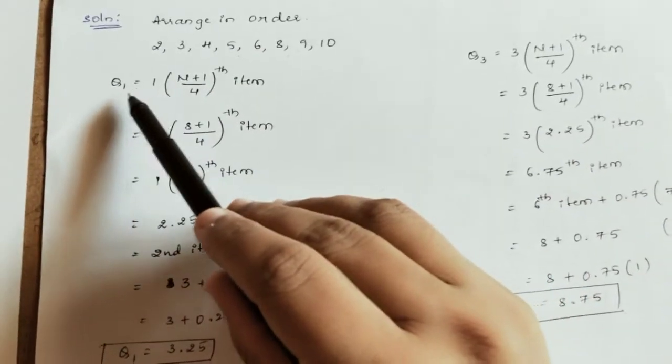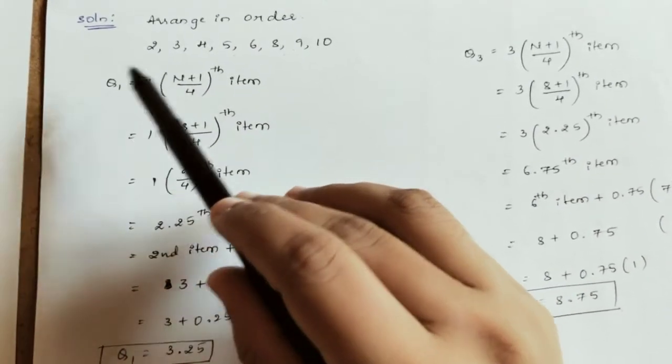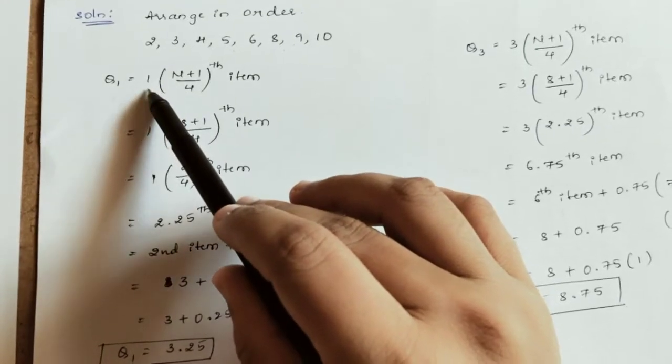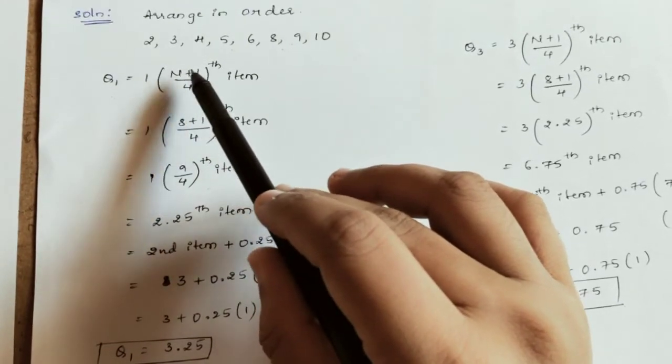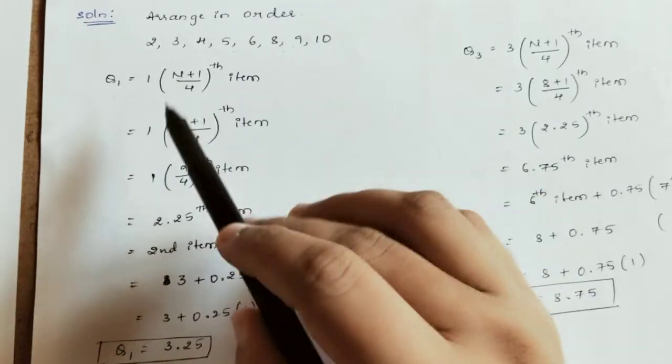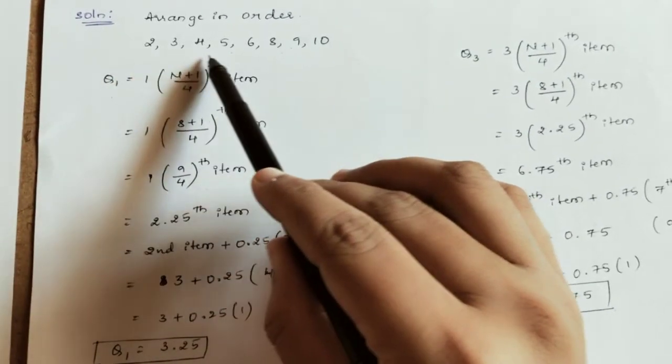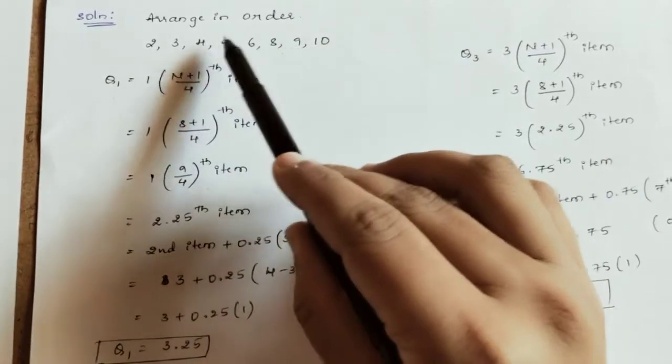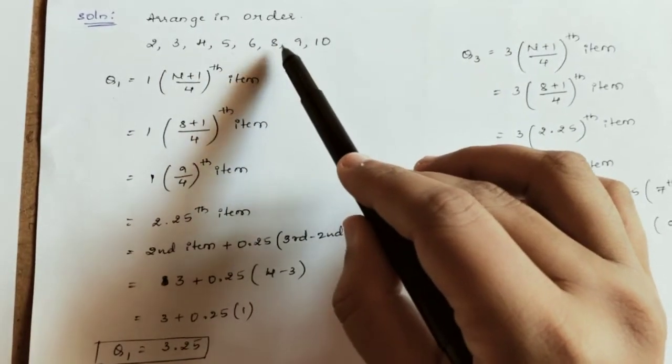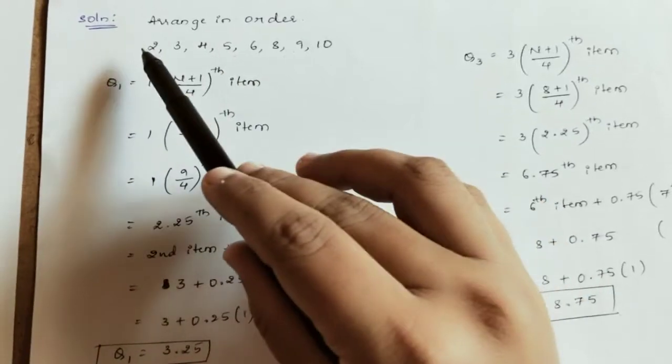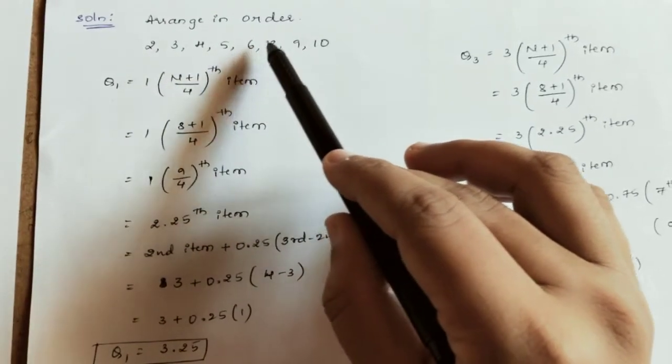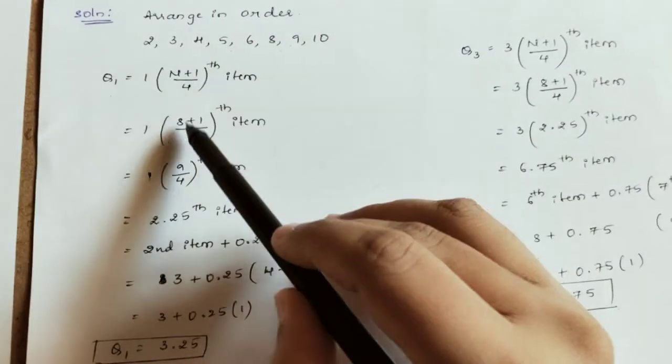Now for Q1, the formula is 1 into n plus 1 divided by 4th item. Here n is the total number of values in the series. How many values are there? 1, 2, 3, 4, 5, 6, 7, 8. So n equals 8.